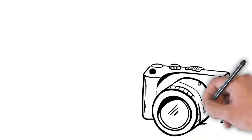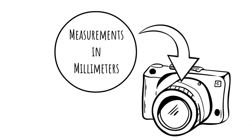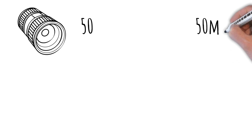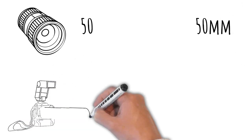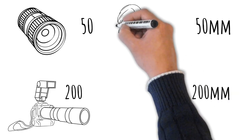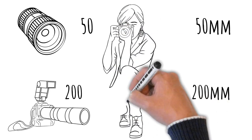So what do these numbers actually mean? Grab a cup of tea or coffee because I'm going to delve into the realms of optical theory. The numbers on your lens are measurements in millimeters — for example, a focal length of 50 millimeters, 200 millimeters, or 20 millimeters. But what exactly does the millimeter number represent?